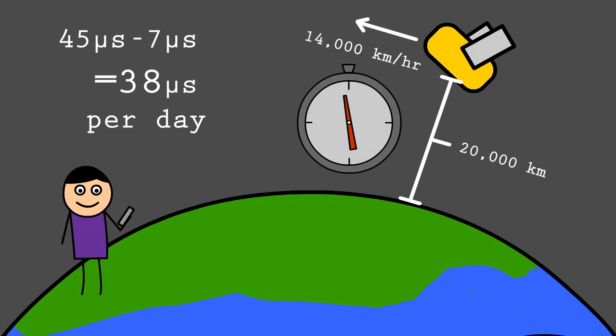When designing the GPS systems, engineers took these effects into account, and without them, the positions given by our phones would increasingly be off by about 10 kilometers per day.